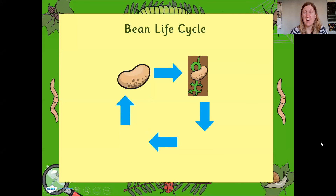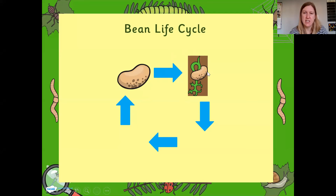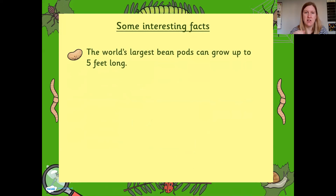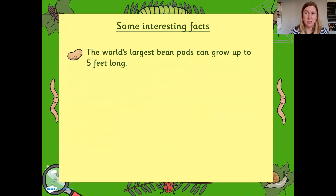So this is what the life cycle is like. We talk about a life cycle — the circle of life, like in The Lion King — it goes around in a circle so it can happen over and over again. We start off with our bean, then our bean gets a shoot. That shoot goes down to the ground to make those roots, and the stem comes up. It grows up into our tall bean plant and it starts to flower. Those flowers grow the beans themselves — they're the fruit of the plant — which you can use to plant and start all over again. The world's largest bean pods can grow up to five feet long — that's about as tall as some of your parents!